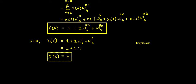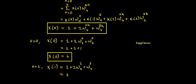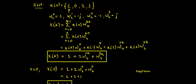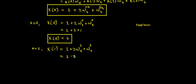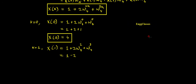Moving further, for k=1: X(1) = 1 + 2·W4^2 + W4^3. Now W4^2 = −1, so 2·W4^2 = −2, and W4^3 = +j. Simplifying: X(1) = 1 − 2 + j = −1 + j. This is the second DFT coefficient.